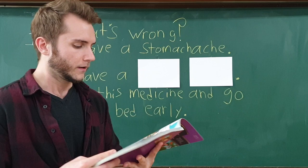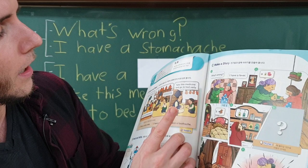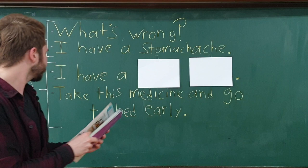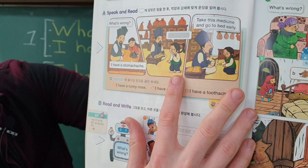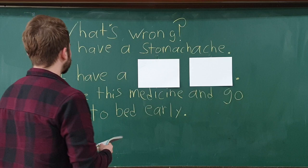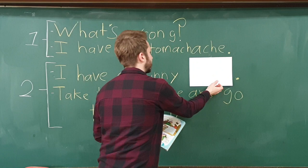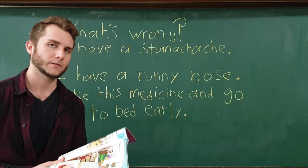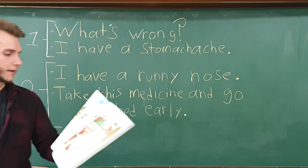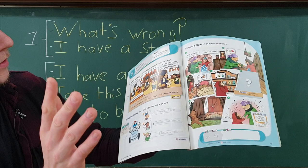Then we have scene 2, and it's a boy. He says 'I have...' and this time it is blank, so what do you think is wrong? Take a look — he's got a tissue, so I think he's saying 'I have a runny nose.' And then the doctor says, 'Take this medicine and go to bed early.'